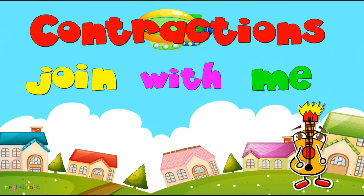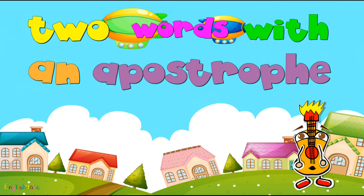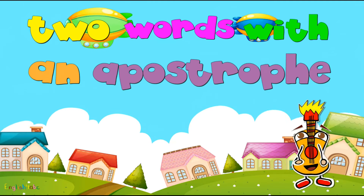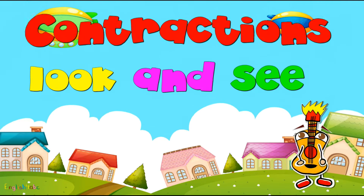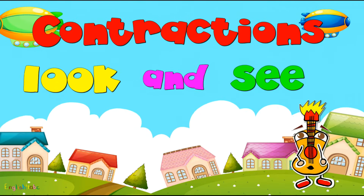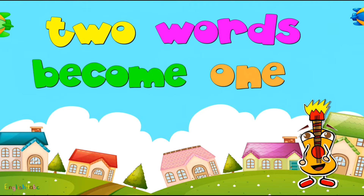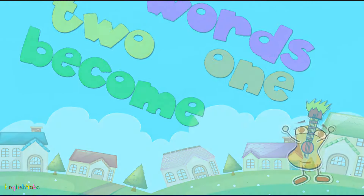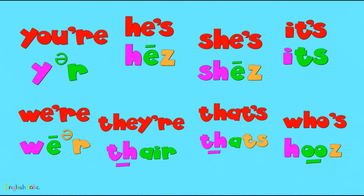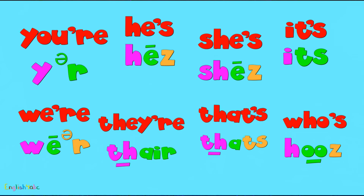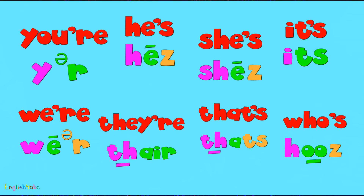Contractions, join with me. Two words with an apostrophe. Contractions, look and see. Two words become one. You're, he's, she's, it's, we're, they're, that's, who's.